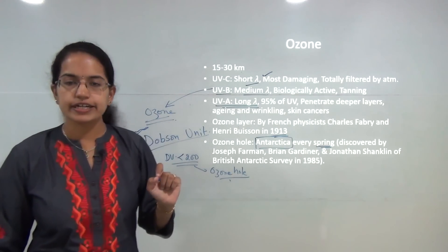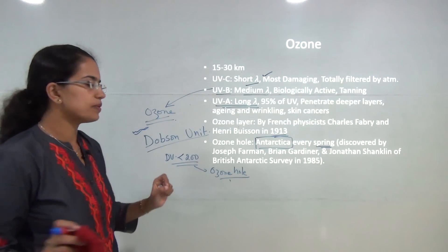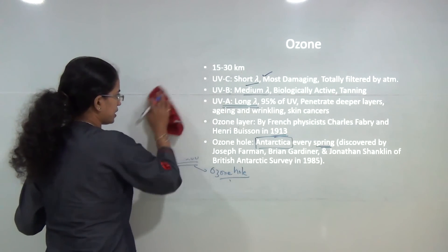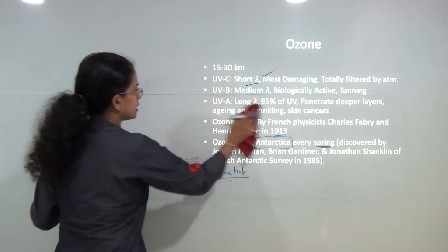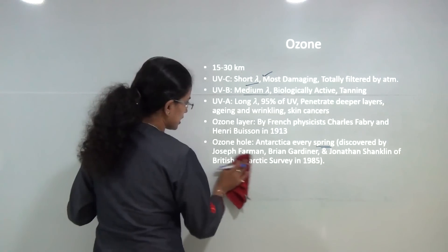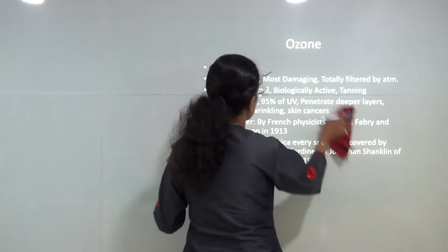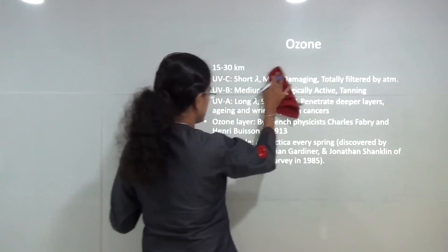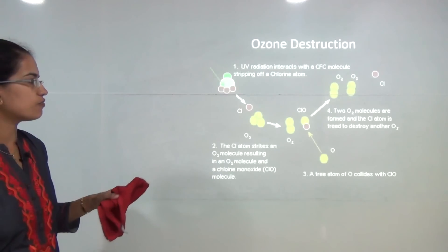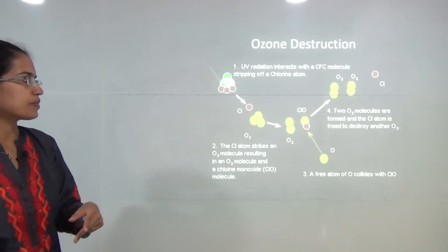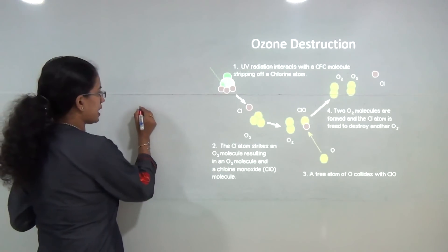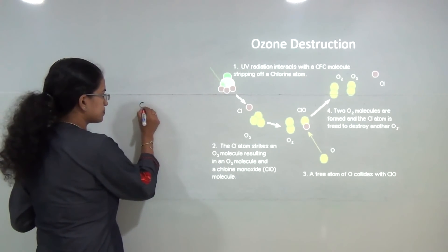We will address two questions: why does ozone hole formation take place, and why it is predominantly towards the polar areas. In reality, we use chlorofluorocarbons (CFCs) as an ingredient in major refrigeration systems, and CFCs release chlorine.